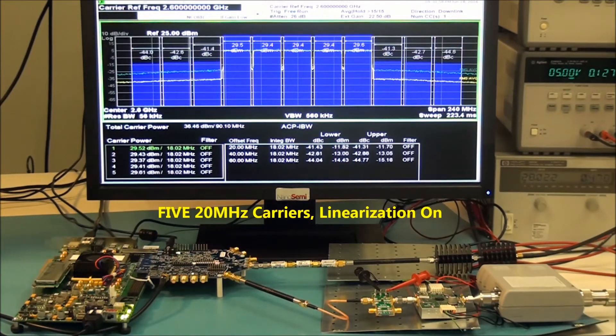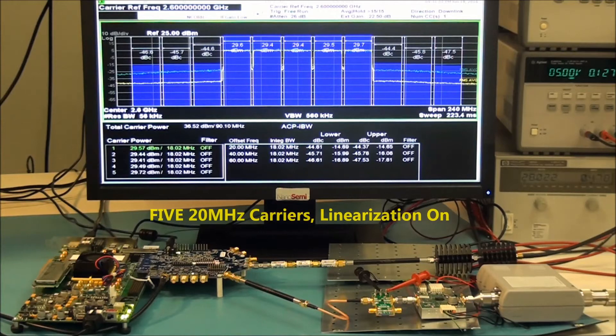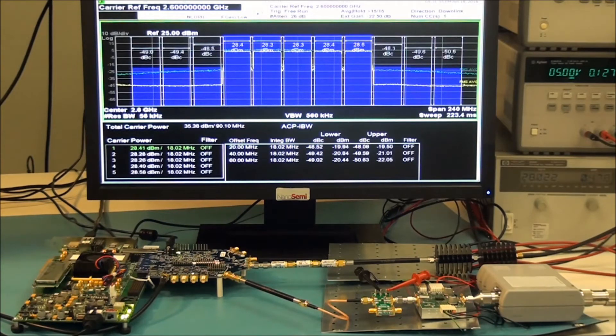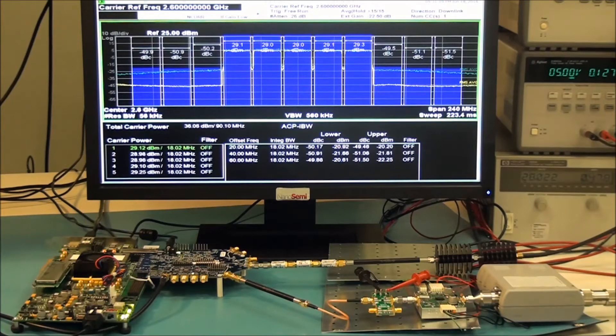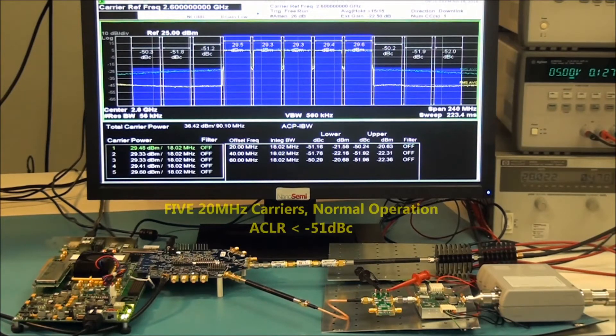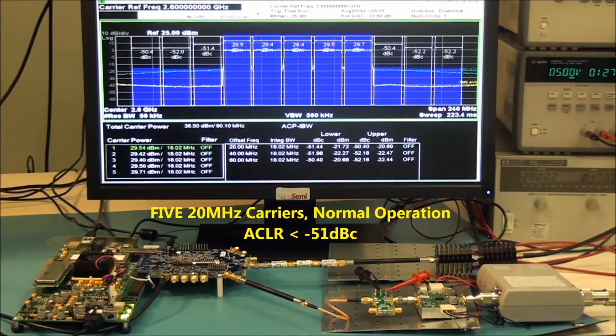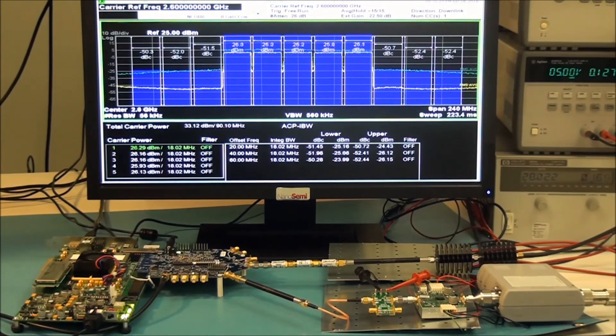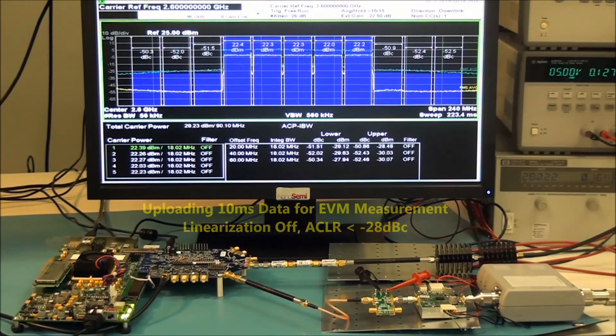As soon as we enable the linearizer, ACLR is quickly improving and dropping down to minus 51 dBc or better. We will also be playing different carrier configurations to demonstrate that we can achieve macrocell performance using a low-cost integrated CMOS transceiver.